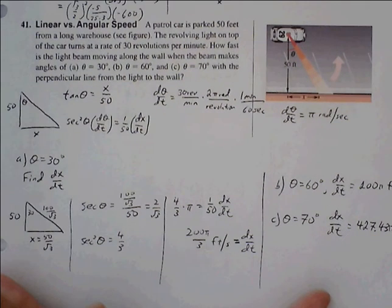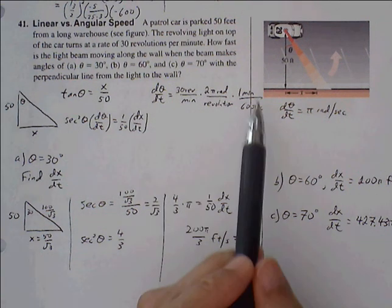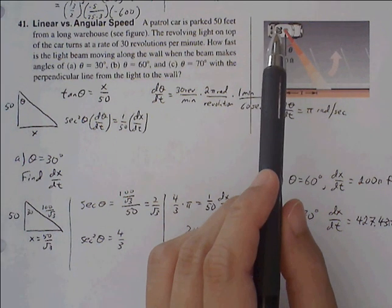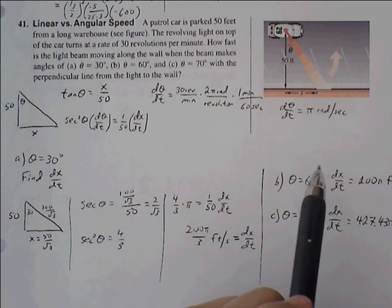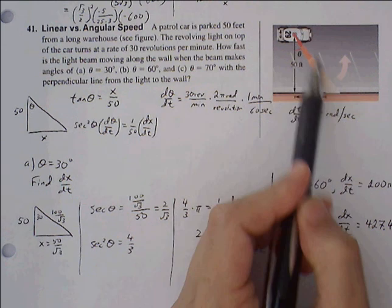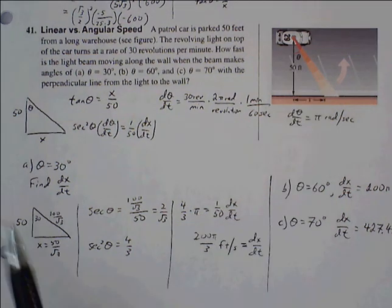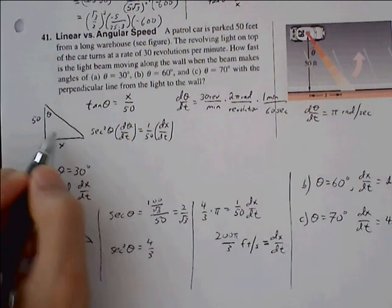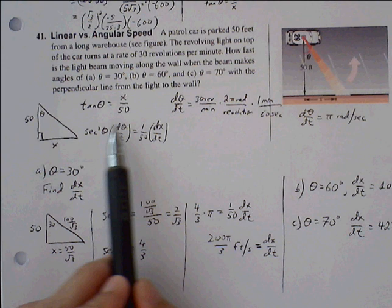With problem 41, linear versus angular speed, the patrol car is parked 50 feet from a long warehouse. The revolving light on top of the car turns at a rate of 30 revolutions per minute. How fast is the light beam moving along the wall when the beam makes these different angle measures? We see a right triangle that's formed by this diagram here. Theta is the angle measure, 50 is the adjacent, and then the opposite is x. So we know that we can use tangent to relate these three variables together. Tangent of theta is opposite over adjacent, so x over 50.